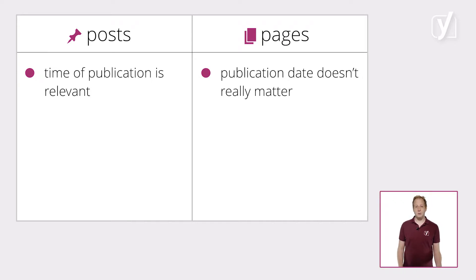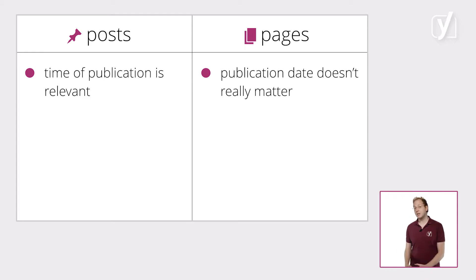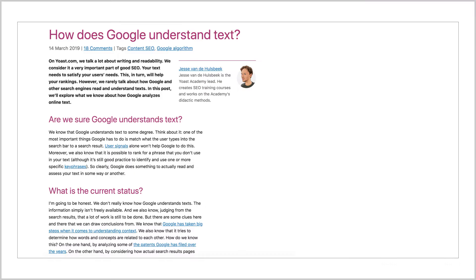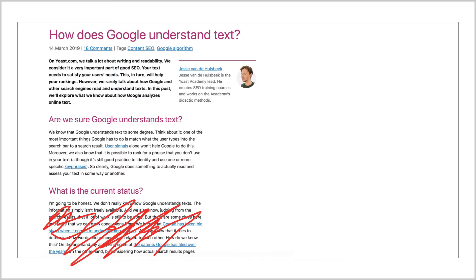On one hand, you have blog posts, which you write and put up with a certain regularity. They need to be fresh and current and to reflect what's happening in the world right now. This also means that, as time passes, they may become less relevant or less accurate. Like, if we're writing an article on how Google understands text, that might be completely different in five years.